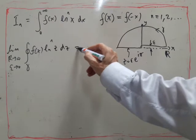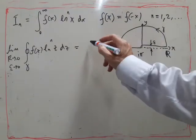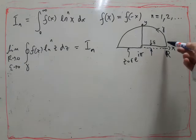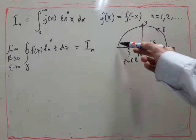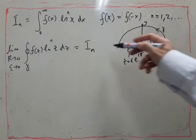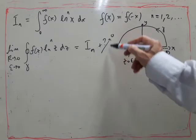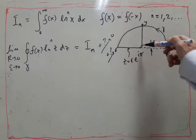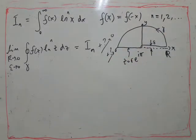So along here, we'll just get I_n. And again, we'll have to examine what happens along here and along here in detail. These two things should go to zero, but again, we have to check carefully that really happens.